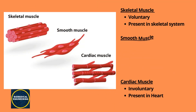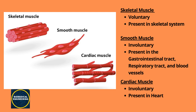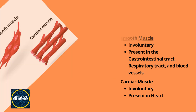There are three types of muscle tissue: skeletal muscle, smooth muscle, and cardiac muscle. Skeletal muscle is attached to bones and is responsible for movement of the body. Smooth muscle is found in the walls of internal organs and helps control the movement of substances through these organs. Cardiac muscle is found in the heart and helps pump blood throughout the body.